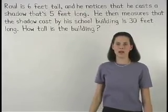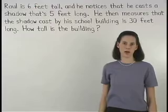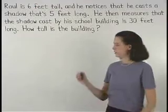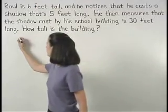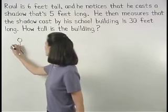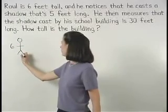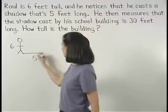In this problem, I would first draw a picture of Raul and his shadow. We know that Raul is six feet tall and he casts a shadow that's five feet long.